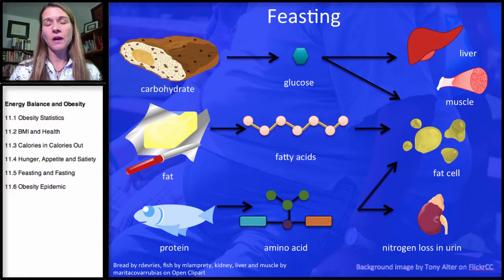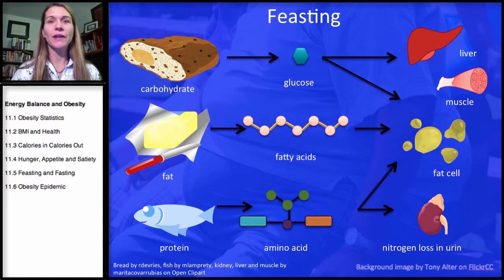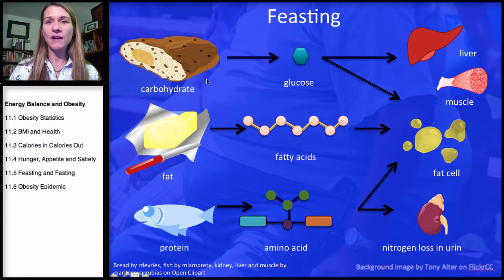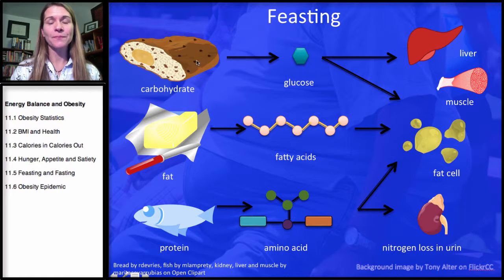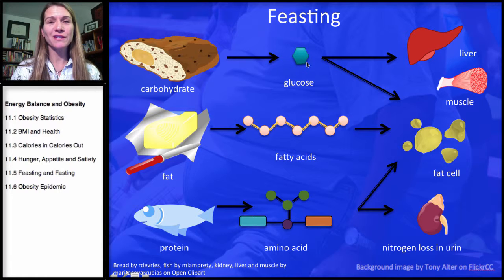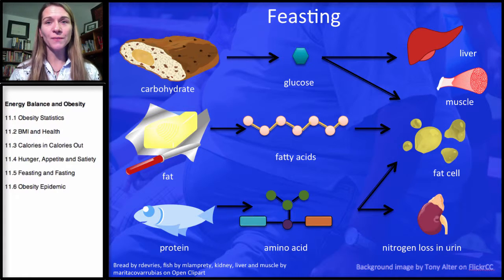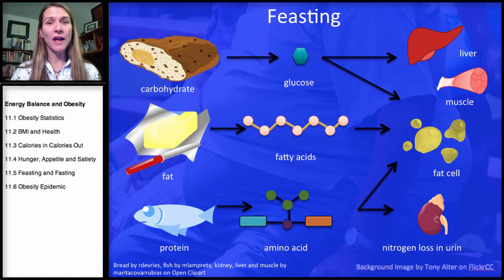Let's take, for example, Thanksgiving or a big birthday party — some situation where you're going to sit down for a very large meal. I want to go through what happens with those nutrients. Starting with carbohydrate — using the example of bread, though carbohydrates come in many forms. It's very easy to overeat refined carbohydrates. Bread is starch-based, which breaks down to maltose and then to glucose. The first places that glucose is stored are the liver and the muscle, and it's stored as glycogen — our glycogen stores.